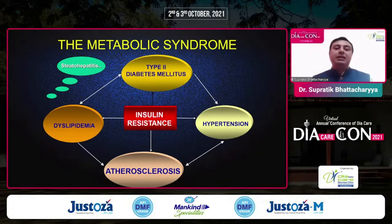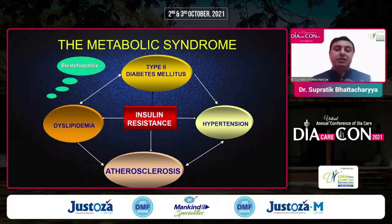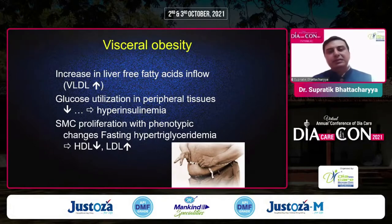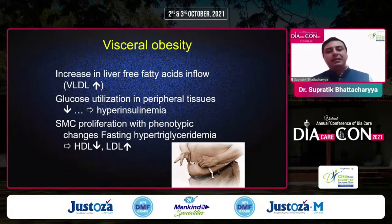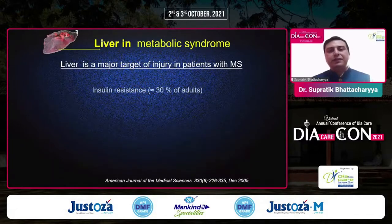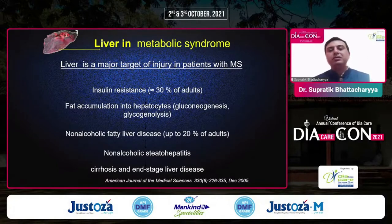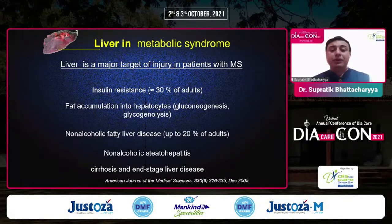In metabolic syndrome, the key point is that insulin resistance can lead to dyslipidemia, hypertension, atherosclerosis, dysglycemia, or type 2 diabetes. Visceral obesity is very important — it increases liver free fatty acids and VLDL, decreases glucose utilization in peripheral tissues, and causes hyperinsulinemia, decreased HDL, increased LDL, and significantly raised triglycerides. Insulin resistance can be as high as 30% in adults, and non-alcoholic fatty liver disease is up to 20% of adults.